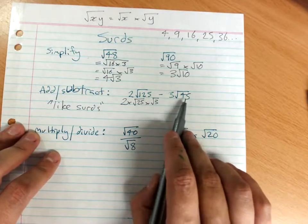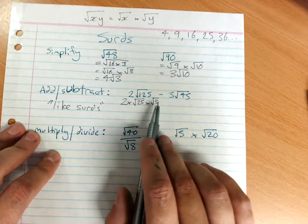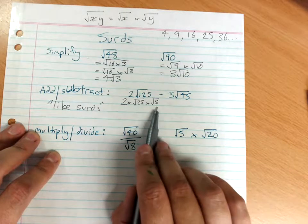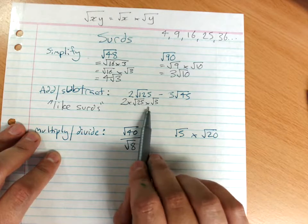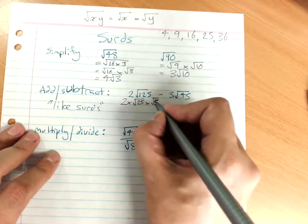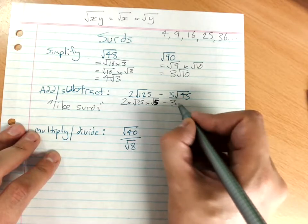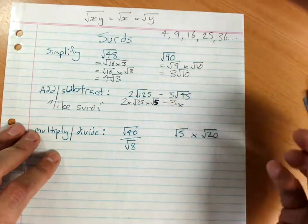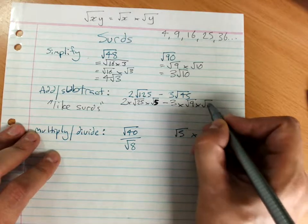And 45. It's not root 3. What have I done wrong? 25 times what gives me 125? This is 5. I'm sorry. Minus 3 times 45, that's got root 9 times root 5.